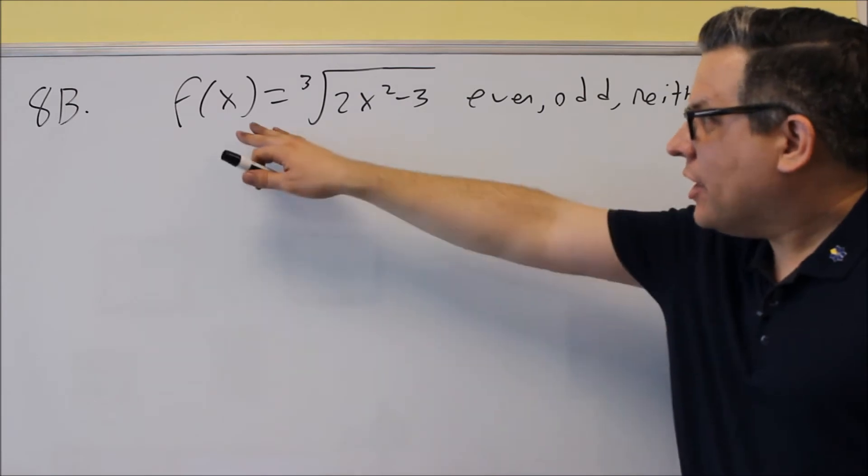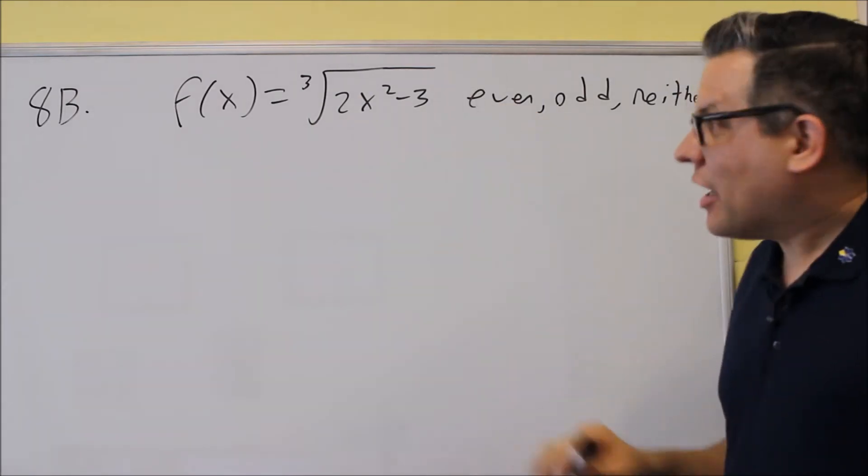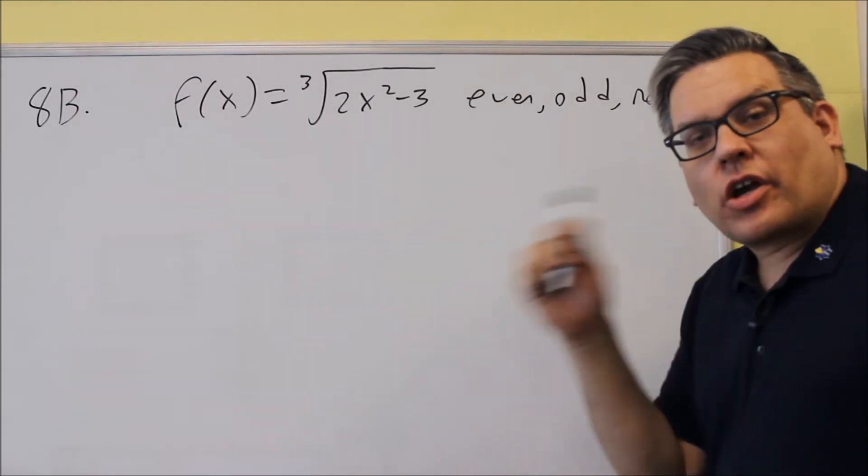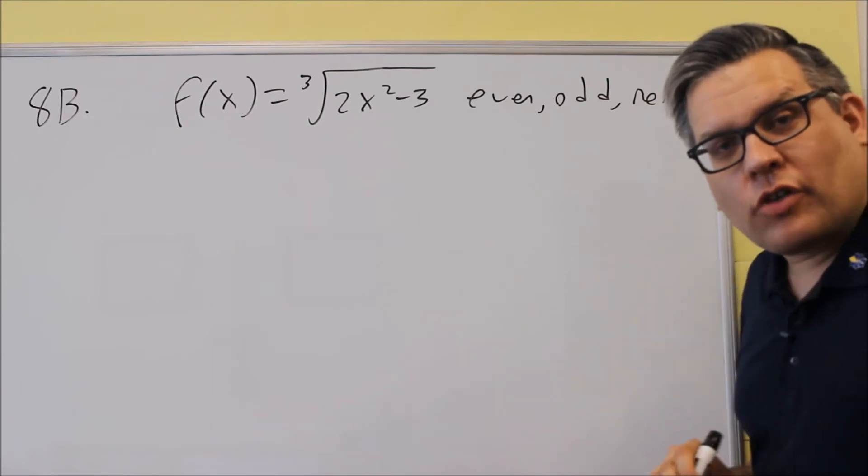Okay, for 8b, we have this one again, classifies as even, odd, or neither. So, like I showed for the first one for a, we always want to find f of negative x first.